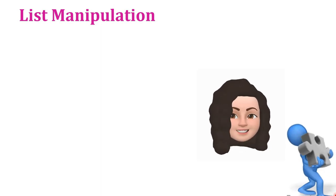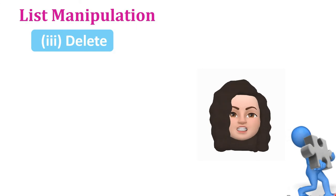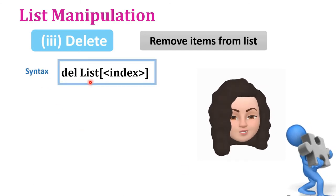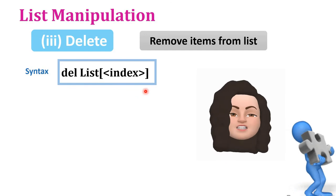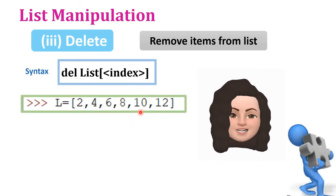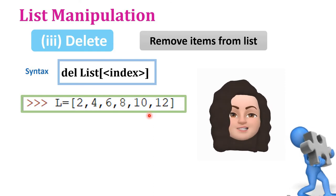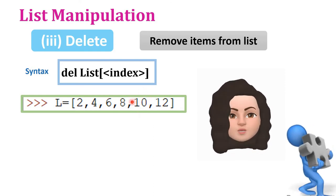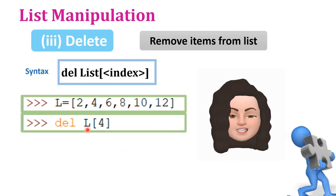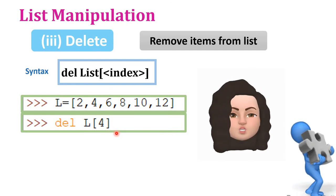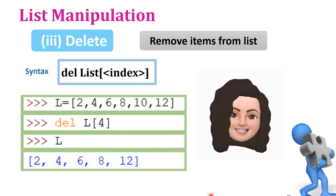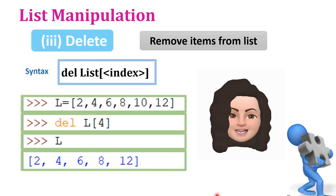To remove an element from a list, use the del keyword. The syntax is: del list_name[index]. For example, L is [2, 4, 6, 8, 10, 12]. To delete the element 10, its index is 4, so we write del L[4]. After deletion, L becomes [2, 4, 6, 8, 12] — element 10 is deleted.